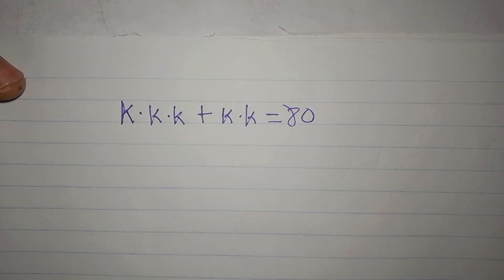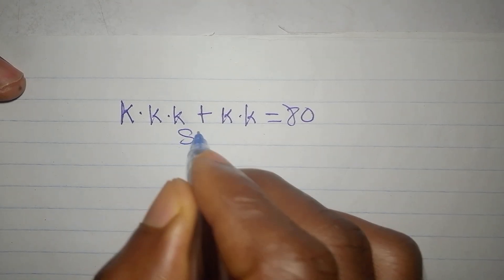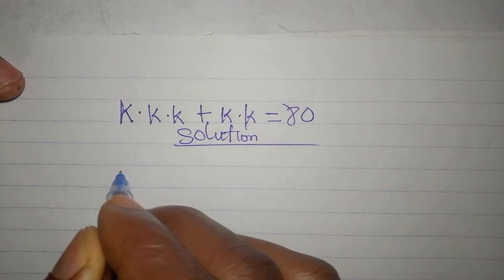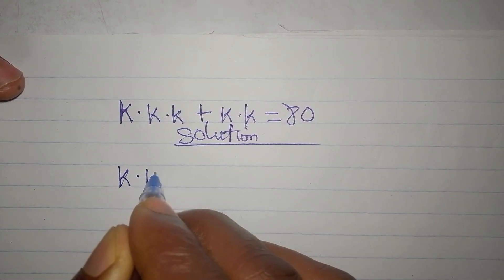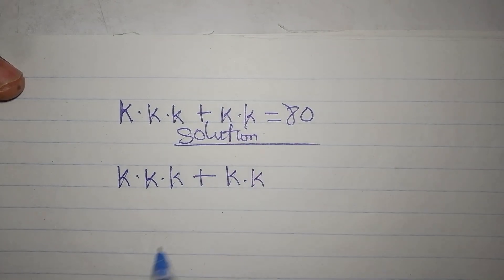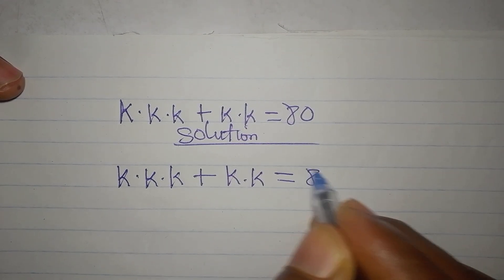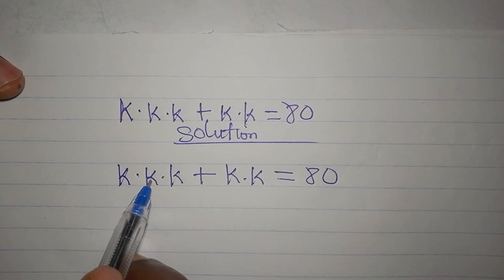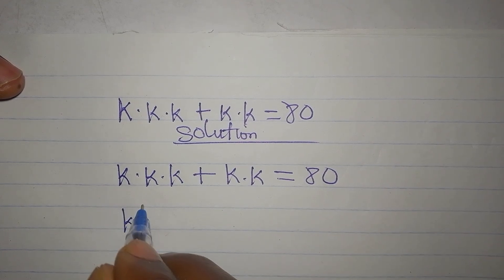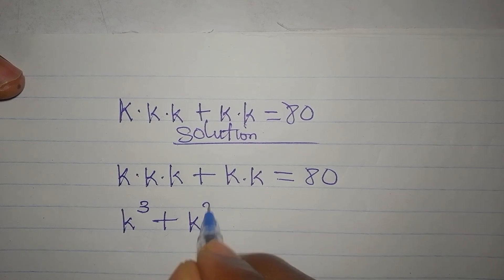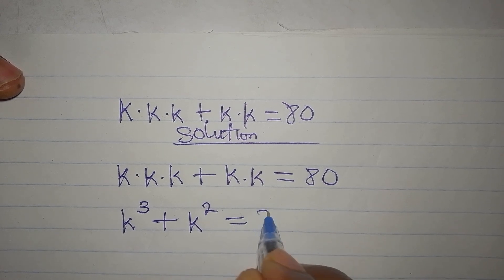Let's solve this problem very quickly. We have k × k × k + k × k = 80. One thing you should know is k × k × k is k to the power of 3, and k × k is k to the power of 2. So we have k³ + k² = 80.